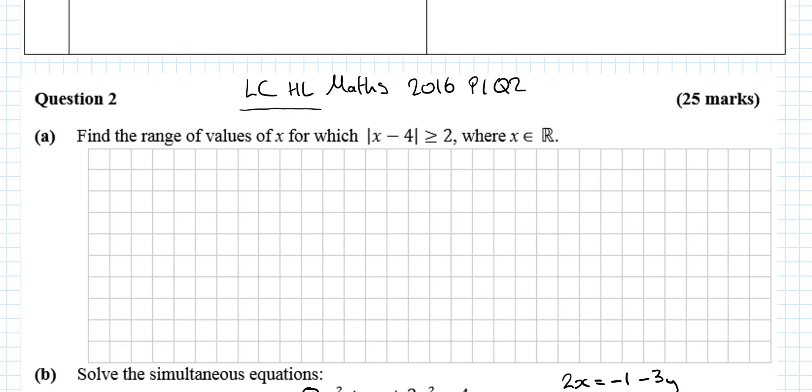We're looking at the Leaving Cert Higher Level Maths 2016 Paper 1 Question 2, and it's a modulus inequality. The first step in most modulus questions would be to square both sides. So we get x minus 4 squared greater than or equal to 2 squared, making sure we're squaring both sides fully. Multiply out this left hand side: x squared minus 8x plus 16 is greater than or equal to 4. x squared minus 8x plus 12 is greater than or equal to 0.